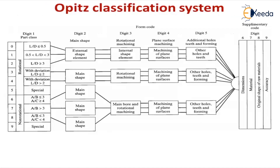Let us see how the Opitz classification system works. It has nine digits. Digit 1 gives you the L-by-D ratio if it is a rotational product. If it is a rectangular shape, A, B, C indicate length, breadth, and width, and you calculate the ratio A/B or A/C. From 0 to 5, digit values represent rotational components — for example, digit 0 means the L/D ratio is less than or equal to 0.5. Digits 6 to 9 cover non-rotational components.